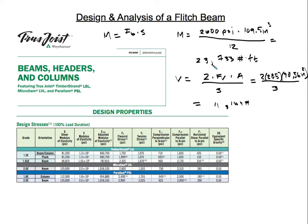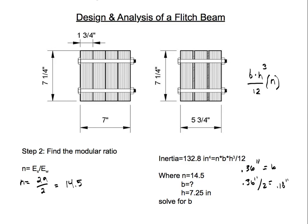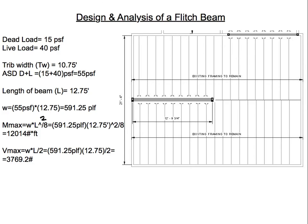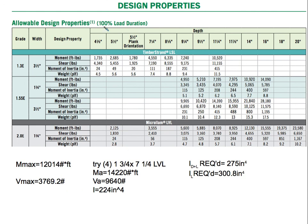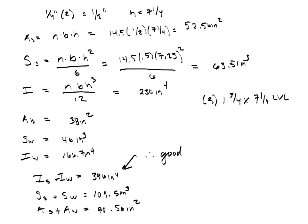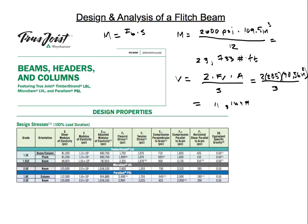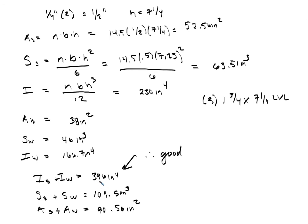The shear capacity equals two times the shear stress times the composite area divided by three: 2 times 285 psi times 90.56 in², divided by 3, giving 11,169 pounds. This is well above the required shear of approximately 3,700 pounds. In summary: the flitch beam is good for moment at 23,733 lb-ft vs. 12,000 lb-ft required, good for shear at 11,169 lbs vs. 3,700 lbs required, and good for deflection with 396 in⁴ vs. 300.8 in⁴ required.